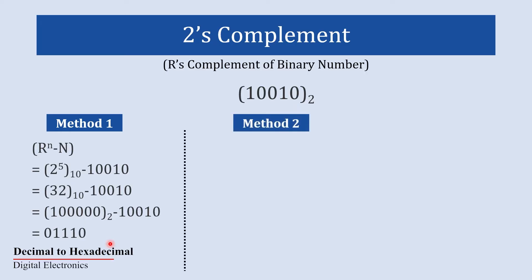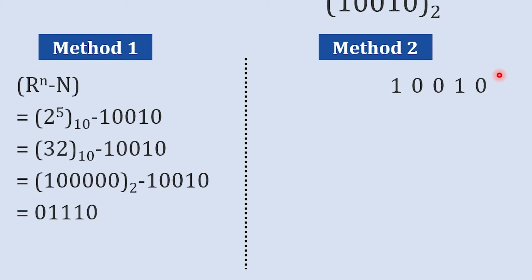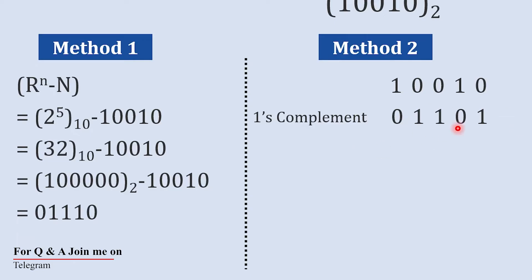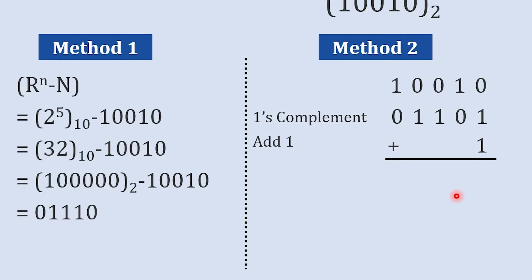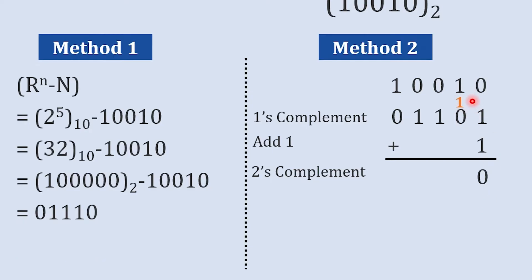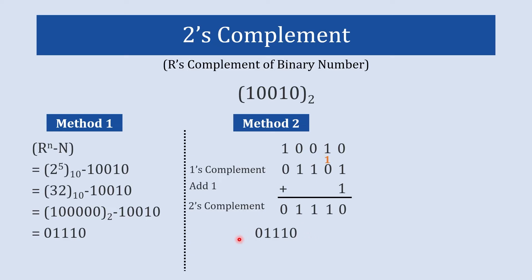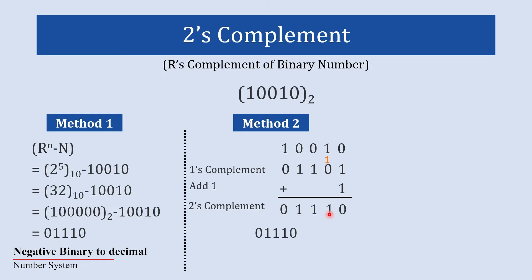Method 2: first find the 1's complement of the number — where there is 0 write 1 and where there is 1 write 0 — giving 0 1 1 0 1. Then add 1 to this 1's complement. Adding: 1 plus 1 is 0 with carry 1, carry plus 1 is 0 with carry, and so on. The result is 0 1 1 1 0, which is the 2's complement — the same as method 1. So in method 2: find 1's complement, then add 1.